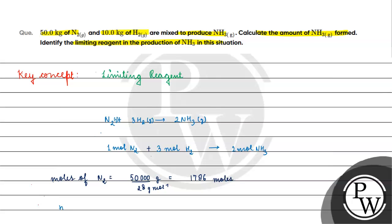Aur moles of hydrogen kya aajaega? Moles of hydrogen will be equals to kya aajaega? Ten into thousand — ten thousand by two. Kitna? Five thousand moles.